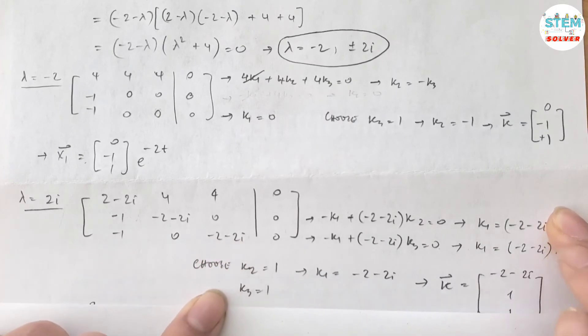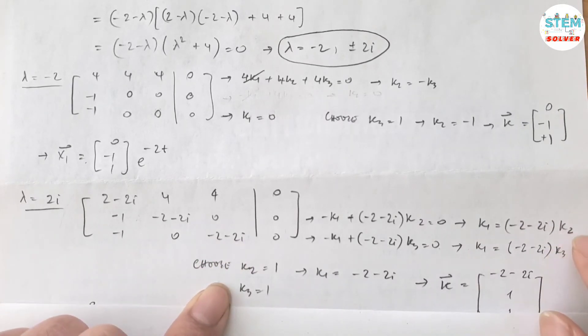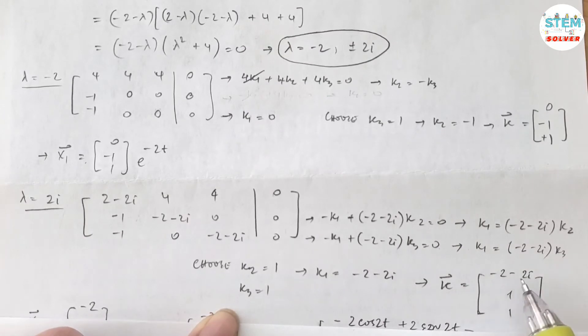Now, if I choose k2 equals 1, k3 equals 1, that gives me k1 equals negative 2 minus 2i. Then my vector k is (negative 2 minus 2i, 1, 1).